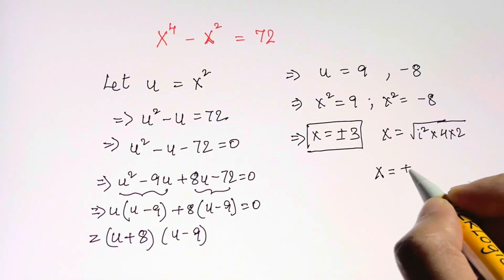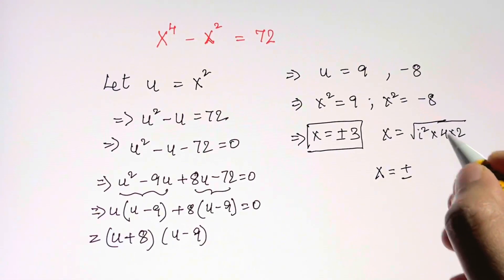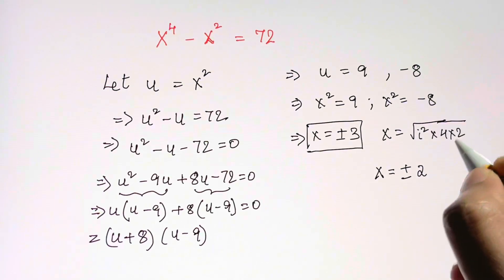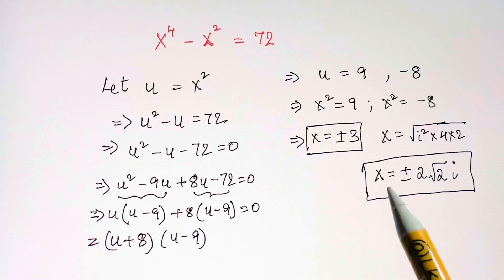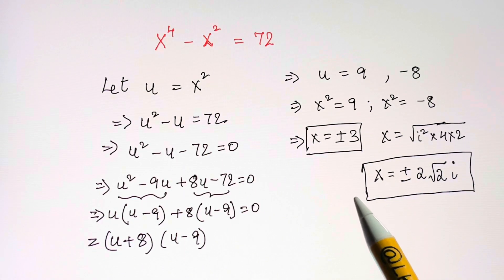Then you have plus or minus square root of 4 is 2, then you have square root of 2, and then i squared and root gets cancelled, so you have i. These are the solutions for x.